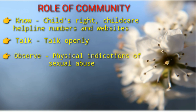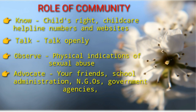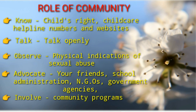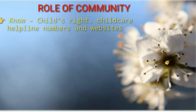The third thing you need to do is observe — observe children for any physical indication of sexual abuse. The fourth thing you need to do is advocate — advocate to your friends, school administration, NGOs, and government agencies to inculcate safety measures for children at their own levels. The fifth and last thing you need to do is involve — get involved in community programs and volunteer your time and resources working against child sexual abuse.